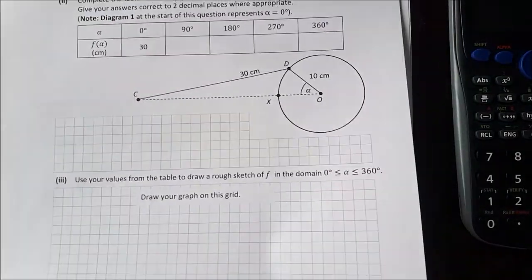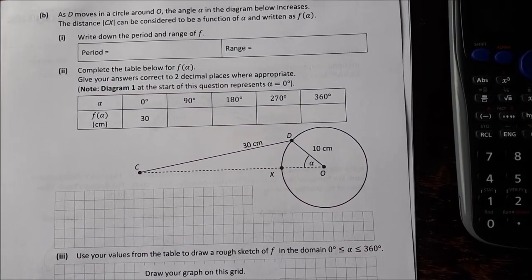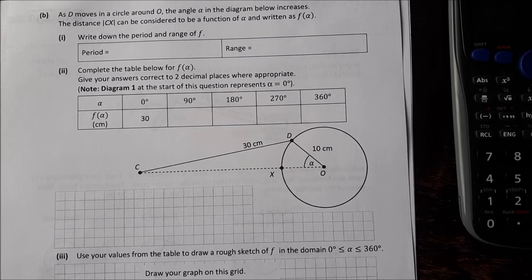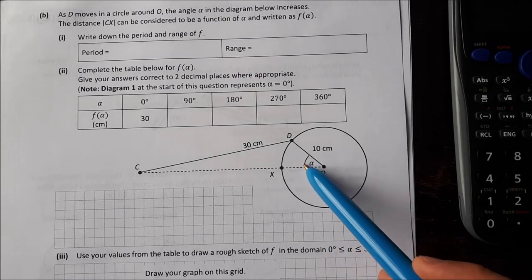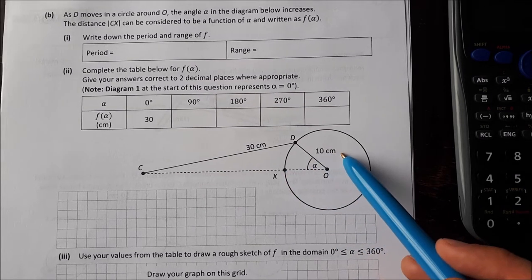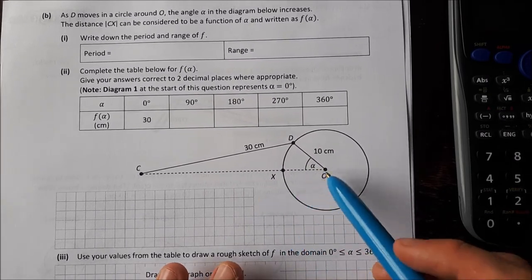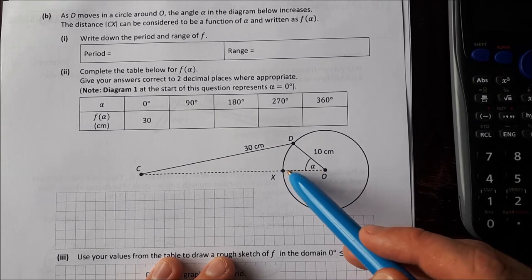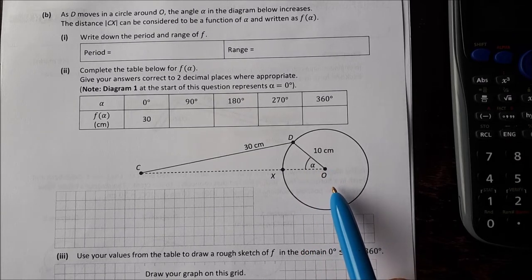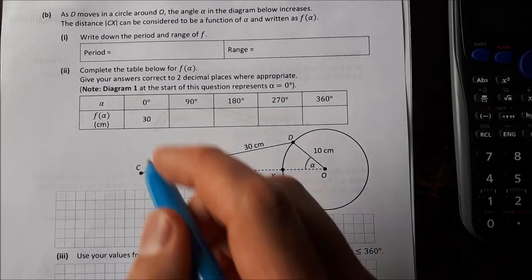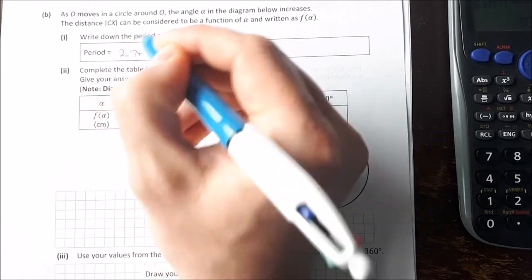Let's click over to the second part. This is part B. As D moves around in a circle around O, the angle alpha in the diagram below increases. The distance CX can be considered to be a function of alpha and written as F of alpha. Write down the period and range of F. Well the smallest alpha can be is 0 degrees and the biggest it can be is 360 degrees, so that's going to be the period of it as well. Usually when we are writing down periods of functions and we're dealing with angles we do it in radians so it's actually going to be 2 pi radians. So the period is 2 pi.